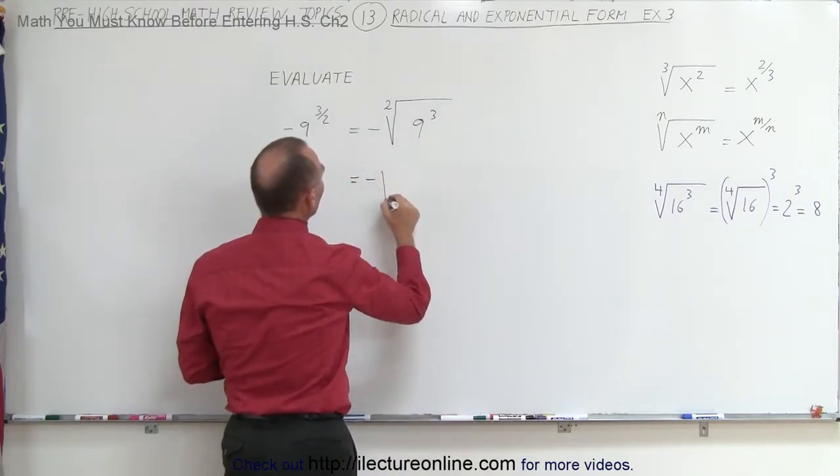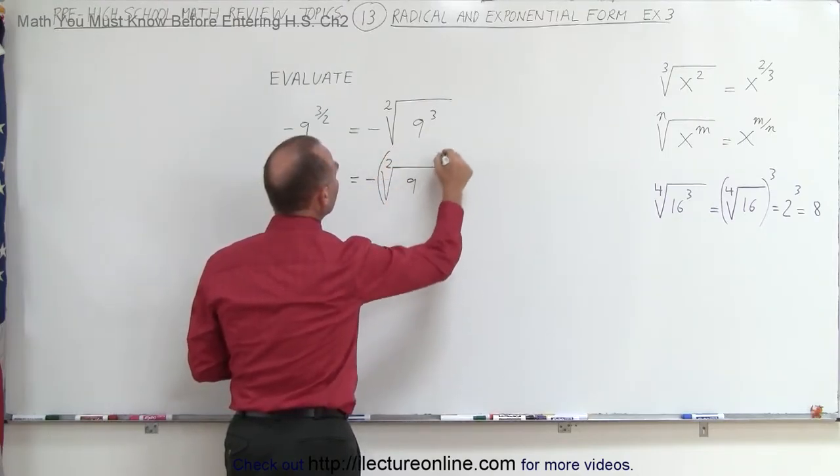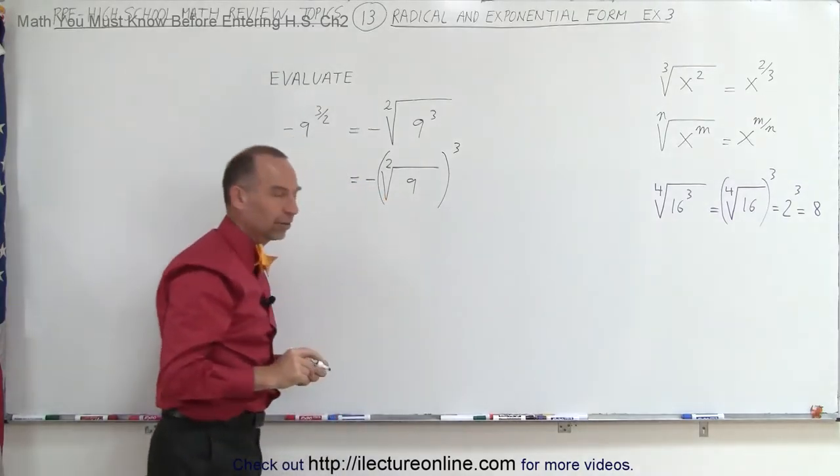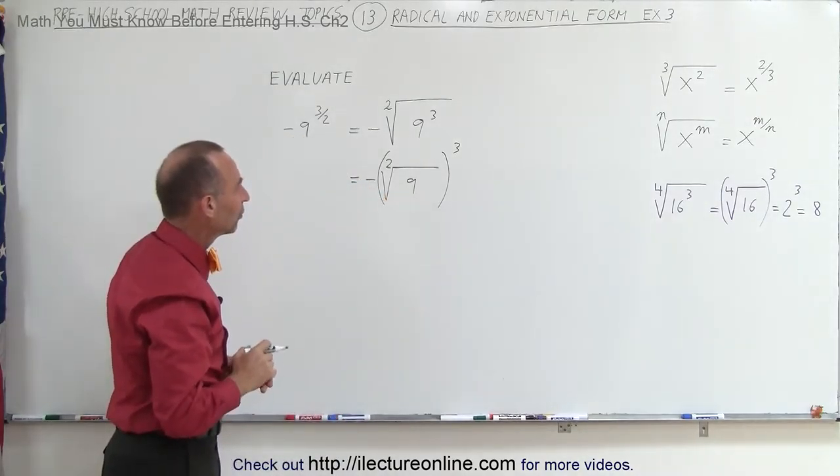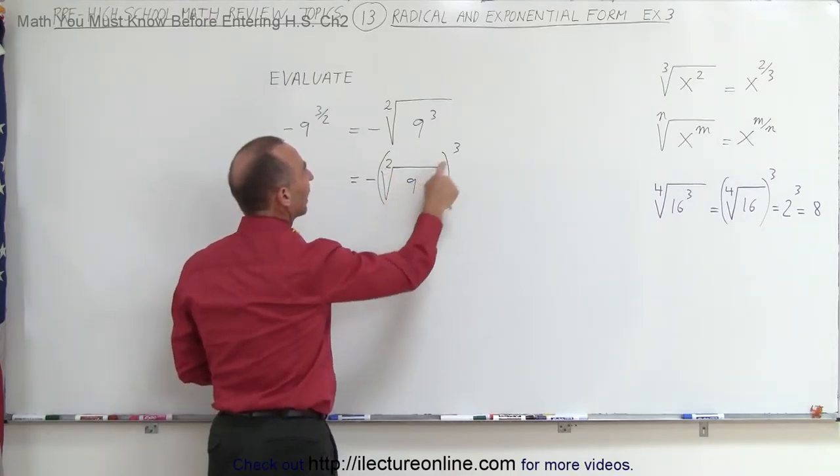This is equal to the negative square root of 9, and this quantity cubed. Now be careful that you do not include a negative sign, because it's not affected by the exponent. So this means that we can simply take the square root of 9 first, and then cube it.